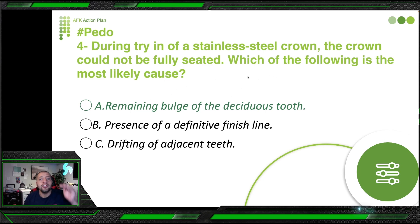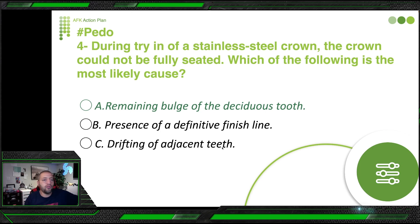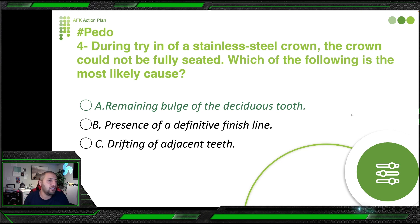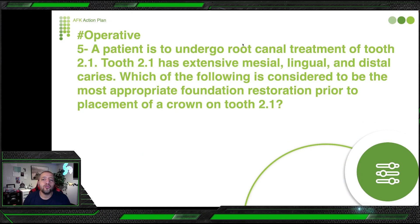Back to the question: why couldn't the crown be fully seated? Remaining bulge of the cervical tooth — yes, this is the answer, because we said we preserve the buccal and lingual undercut/bulge, and the crown must snap over it. Presence of a definitive finish line — no, we don't do a finish line for SSC. Drifting of adjacent teeth — not applicable here. Cement it with glass ionomer cement, which releases fluoride — beneficial for high-caries-risk patients.